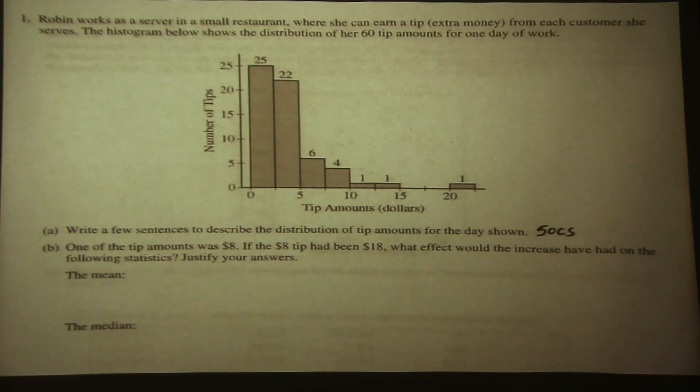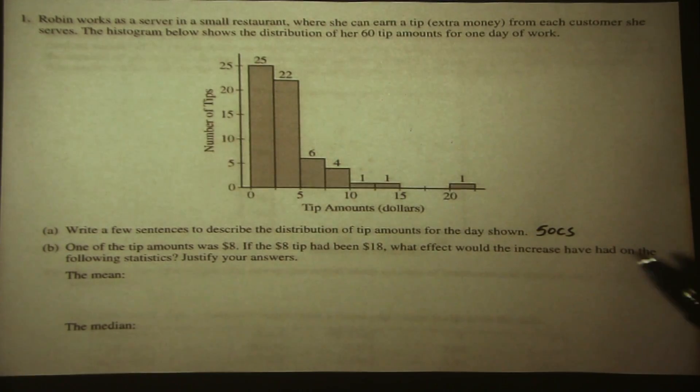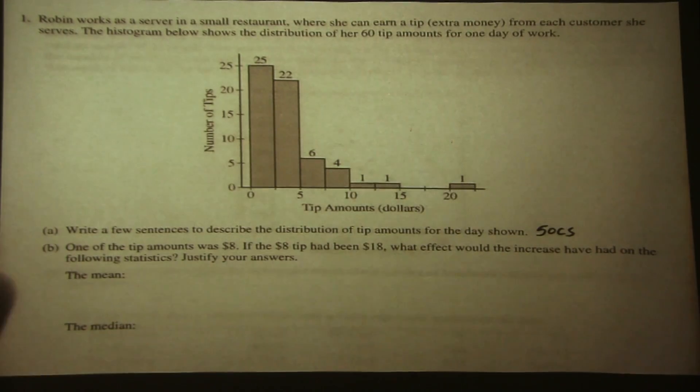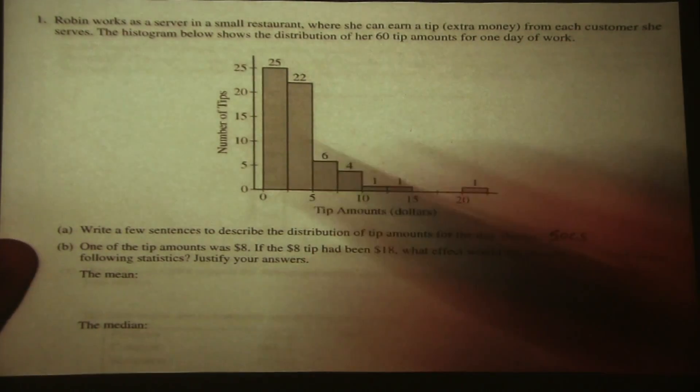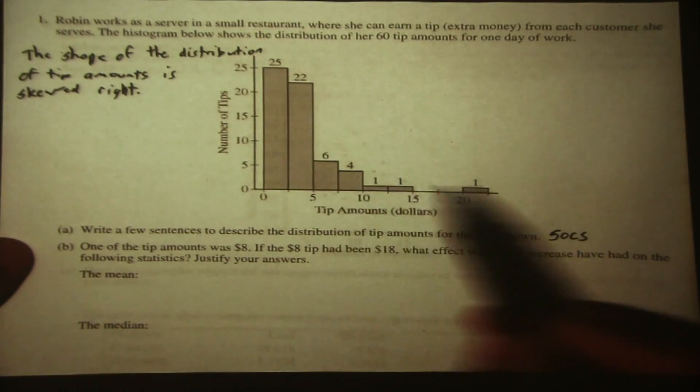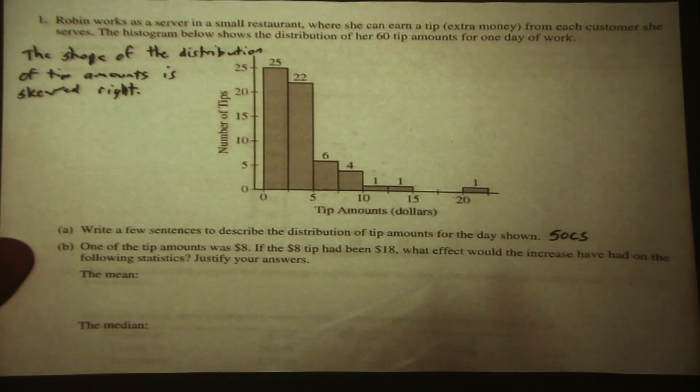Also, any time we can, we want to use the context rather than just describing some generic distribution. So we can say the shape of the distribution of tip amounts is skewed right, which we can clearly see with the tail going to the right.